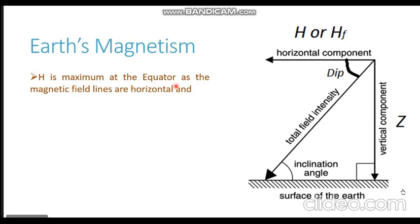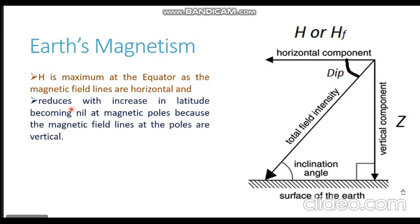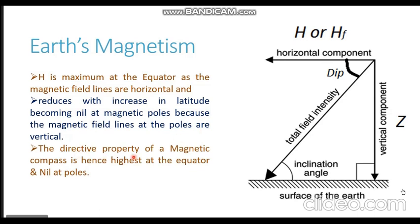The horizontal force H is maximum at the equator, as at the equator the magnetic field lines are perfectly horizontal. It keeps on reducing as latitude increases, becoming nil at the magnetic poles — because at the magnetic pole the field lines are perfectly vertical with no horizontal component at all. Therefore the directive property of a magnetic compass is highest at the equator and nil at the poles. This is why the magnetic compass starts to lose its directive force as the vessel goes into higher latitudes — above about 70 degrees north or south, the magnetic compass becomes unreliable.